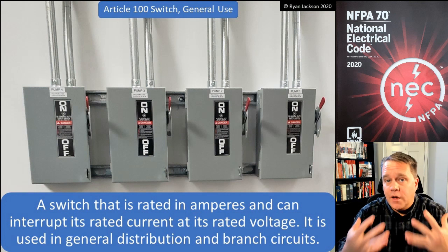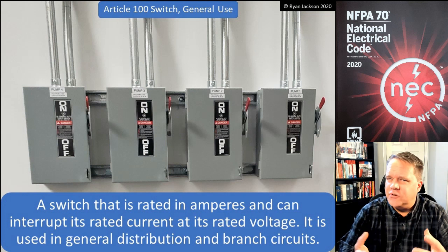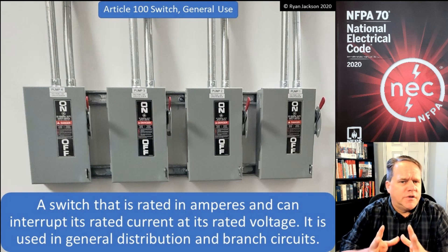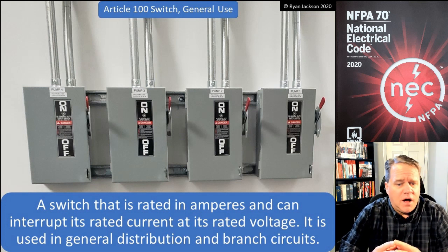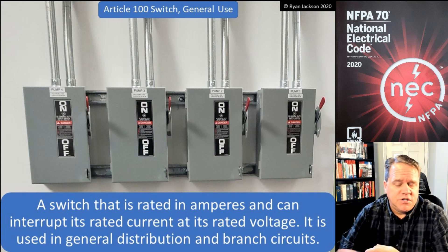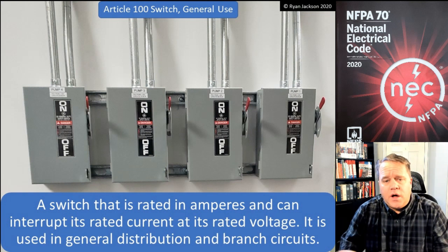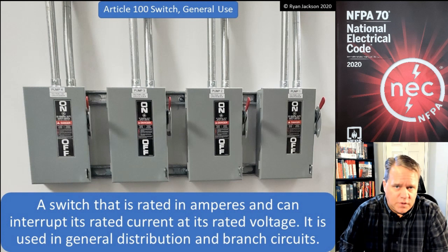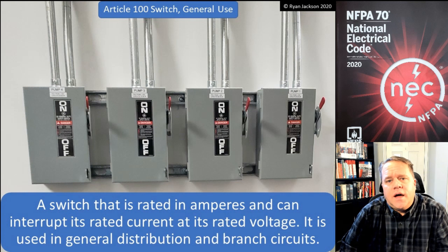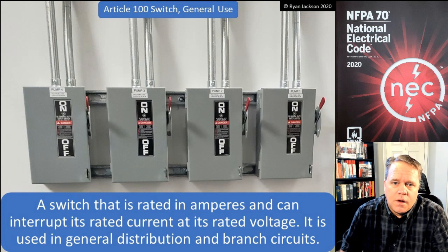Article 100 covers several types of switches and we're going to cover most of them — there are a couple we're not going to cover that are pretty obscure. The first switch we're going to talk about is a general use switch, which is a switch rated in amperes that can interrupt its rated current at its rated voltage. It's used in general distribution and branch circuits. Here in the photograph we have four general use switches. Next time you see a fuse disconnect like this, take a look and you'll notice it's probably listed as a general use switch.